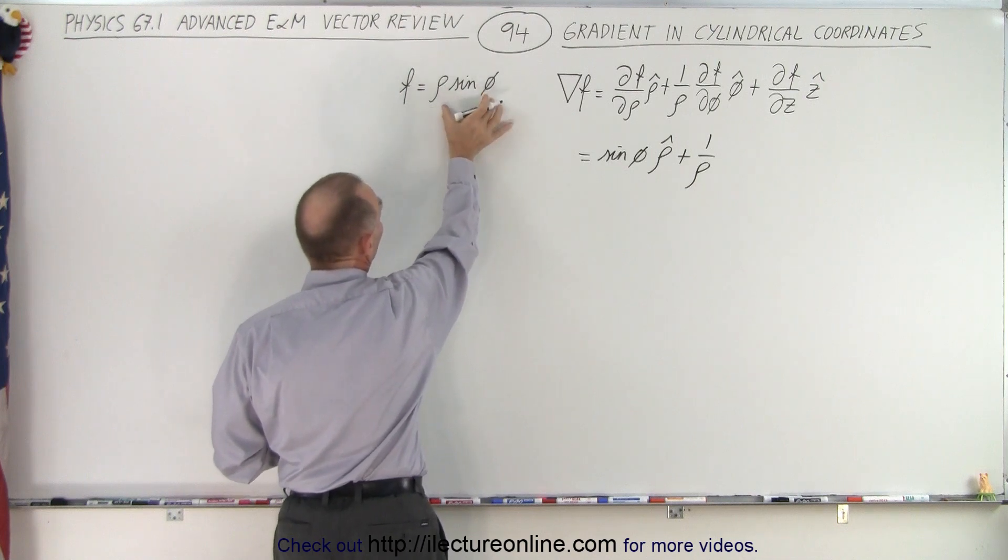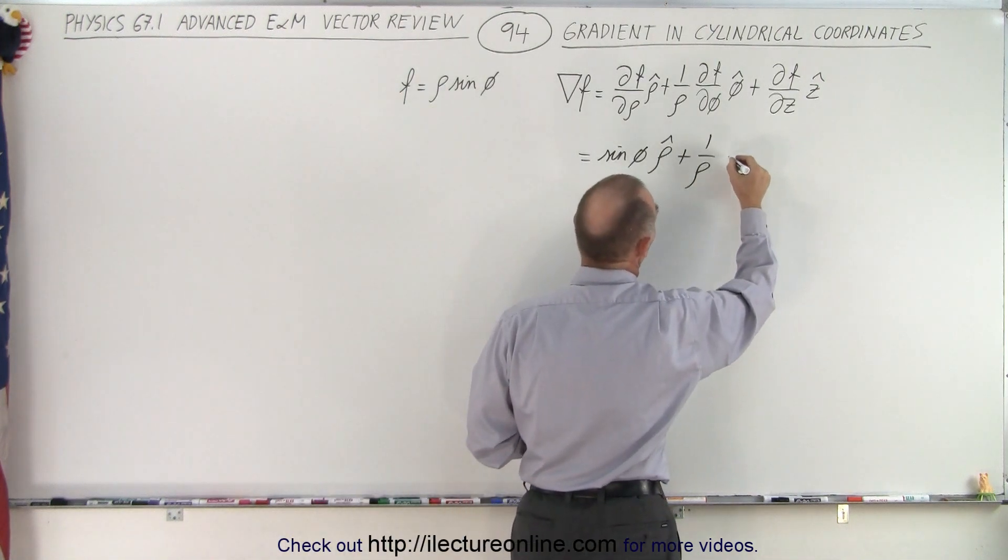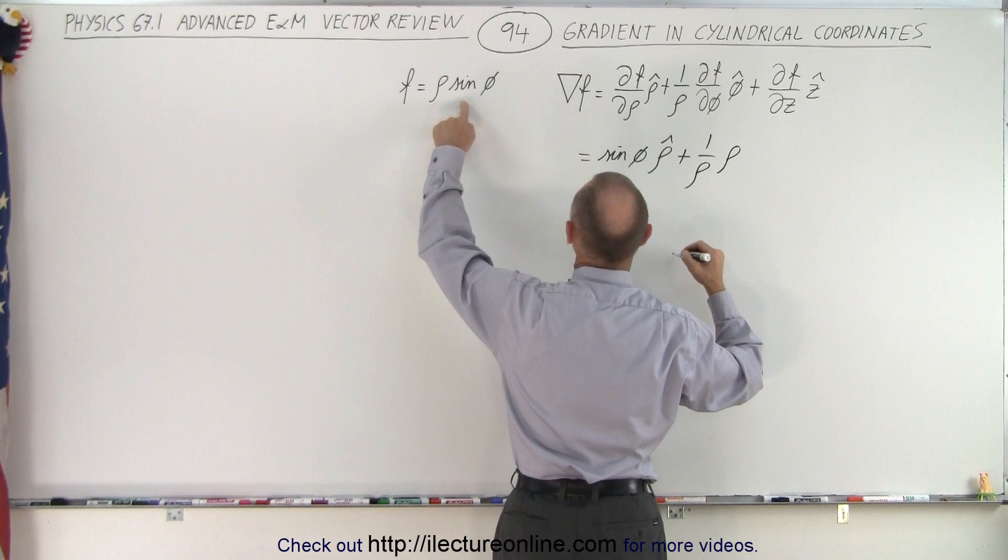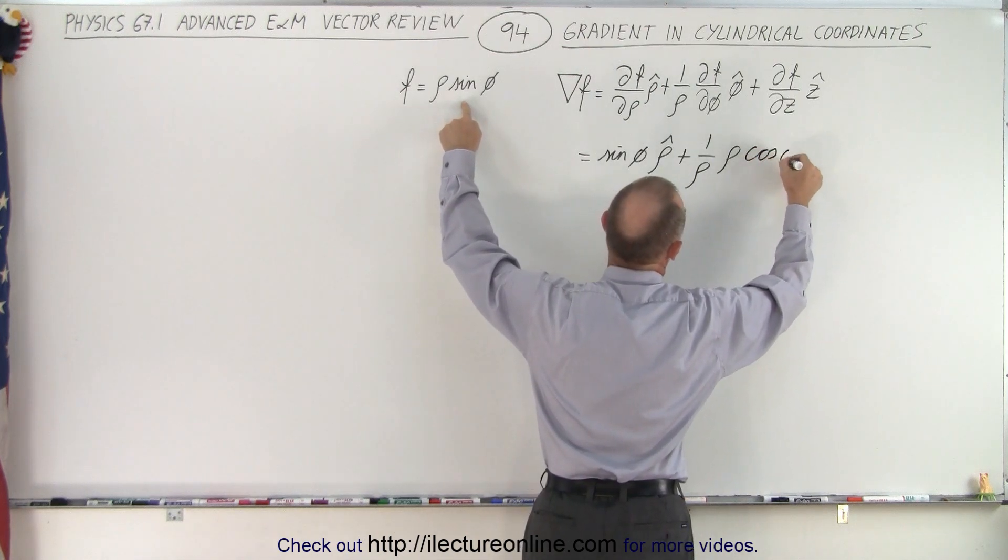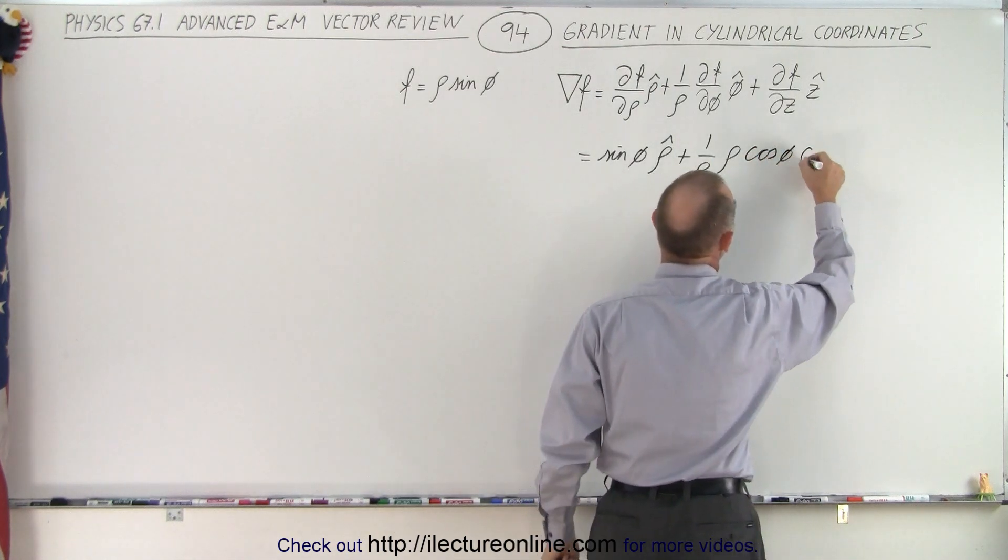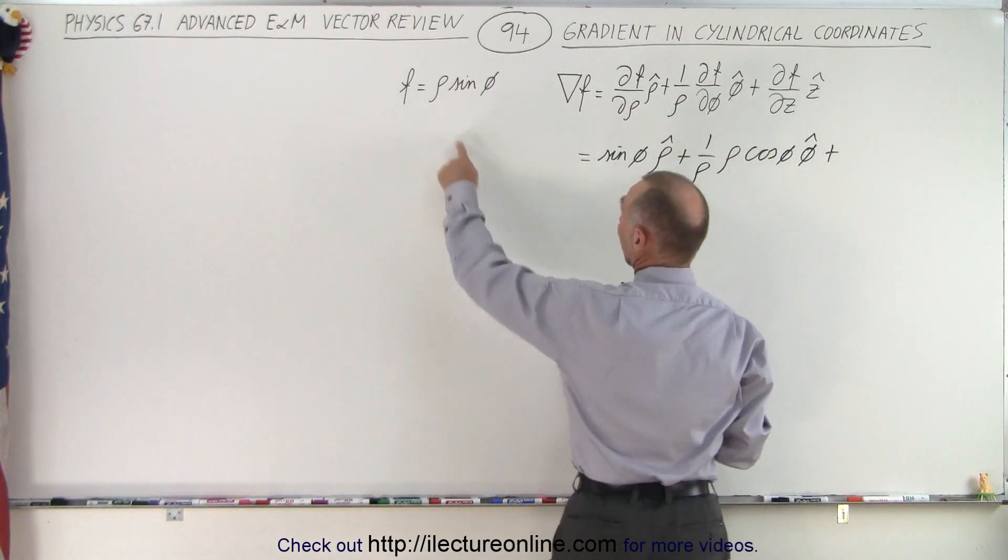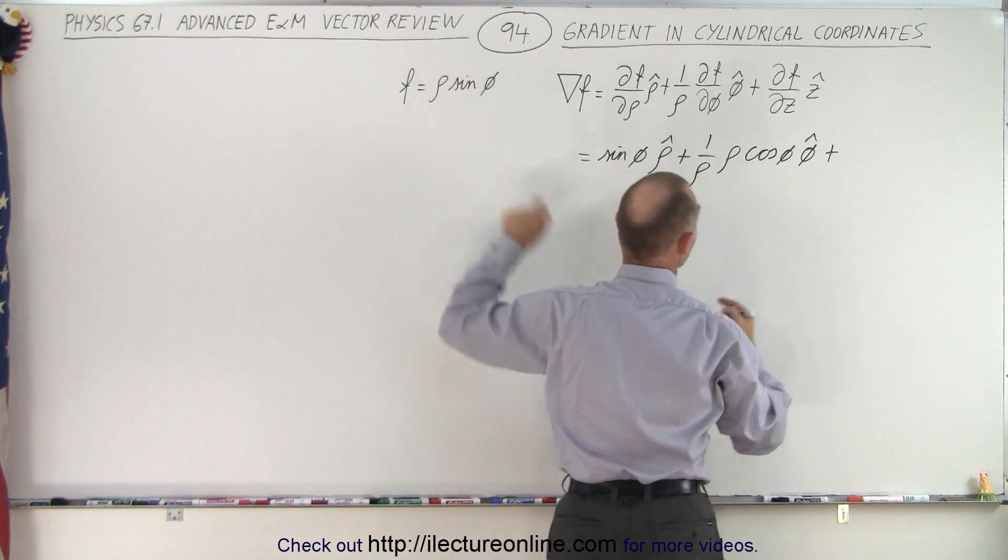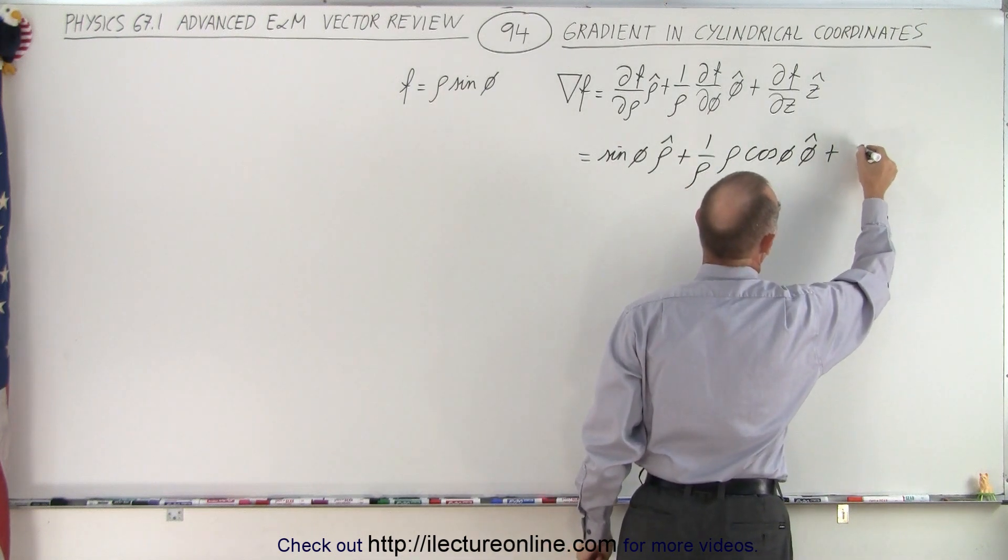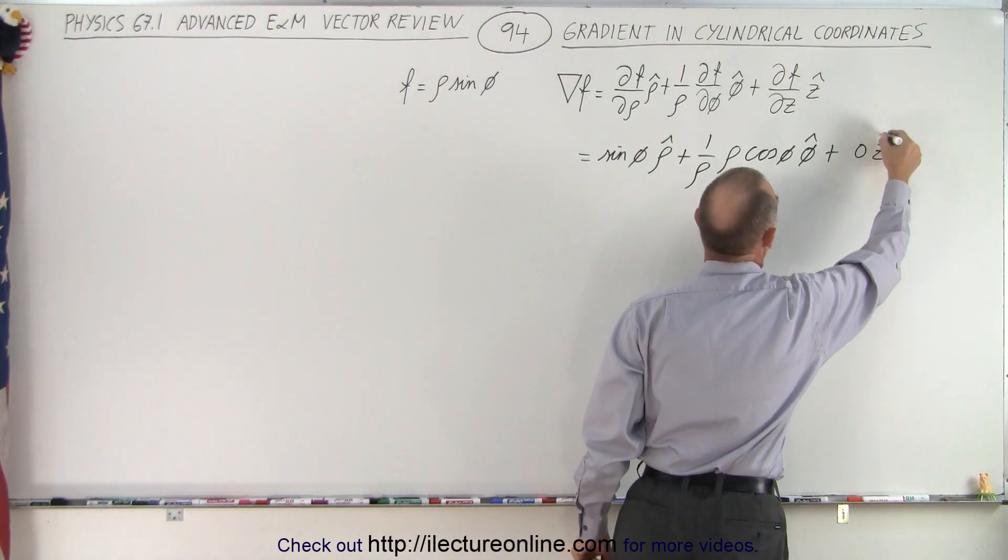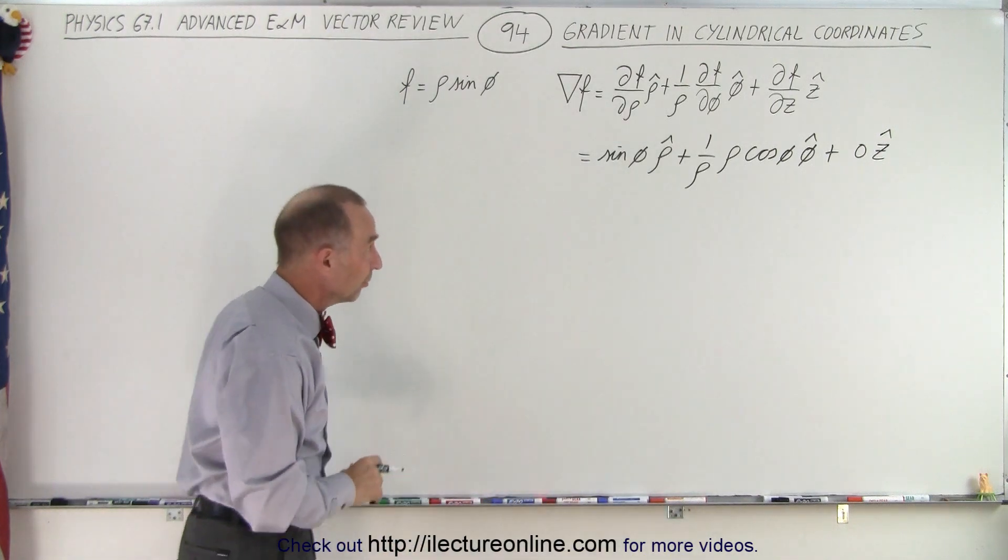So this becomes a constant, that now becomes the variable. So we end up with the constant rho times the derivative of the sine, which is the cosine of phi. And that will be in the phi direction, plus the partial derivative with respect to z, but there's no z in that function. So therefore that becomes 0 in the z direction. We just put it there for reference.